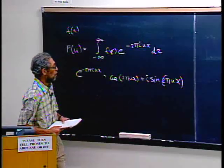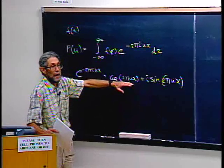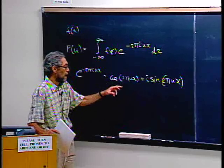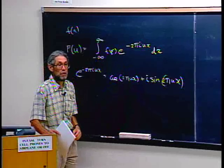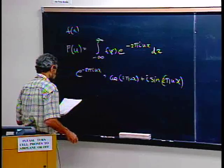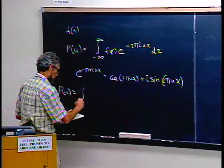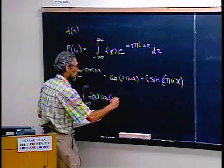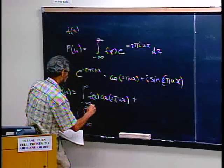Since e to the i-anything equals cosine of that thing plus i times the sine of that thing, the real part of the Fourier transform is the integral with the cosine. If you have exactly the same frequency, that integral would be infinite — a delta function. Otherwise it would be zero because the frequencies beat against each other and the positive parts cancel with the negative parts.